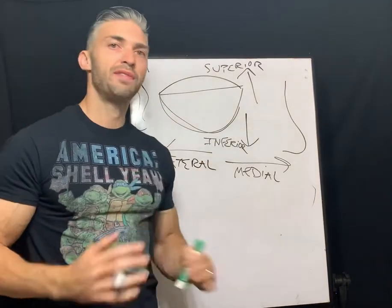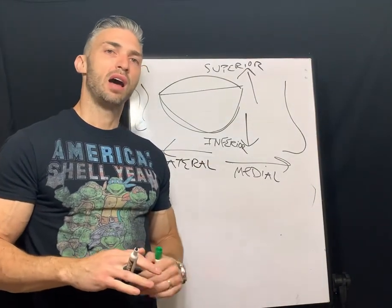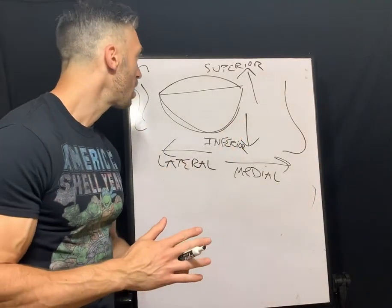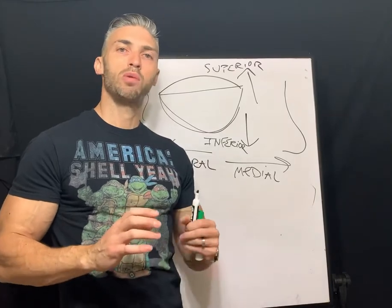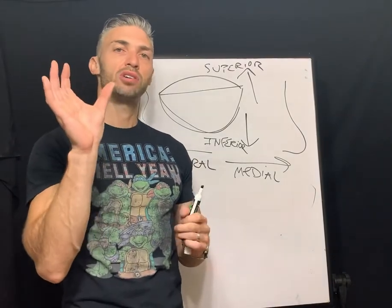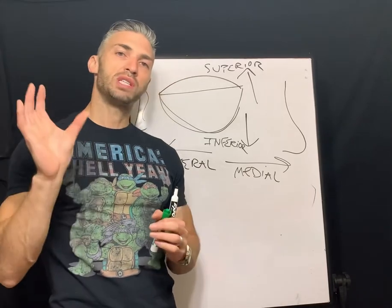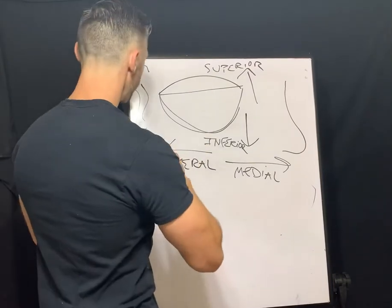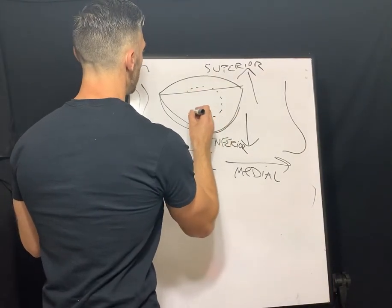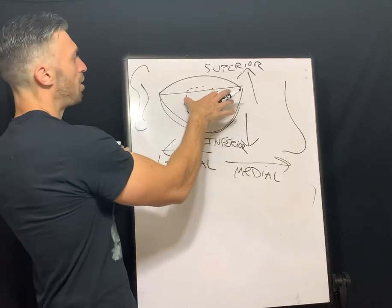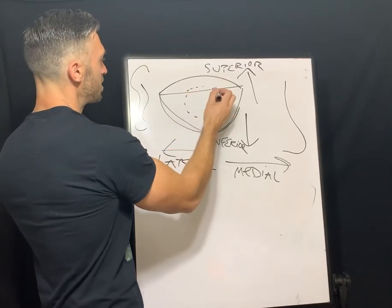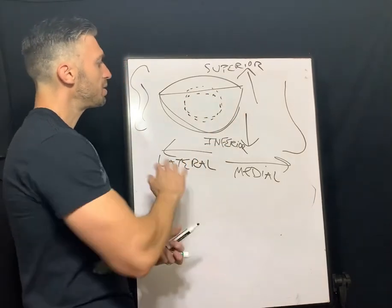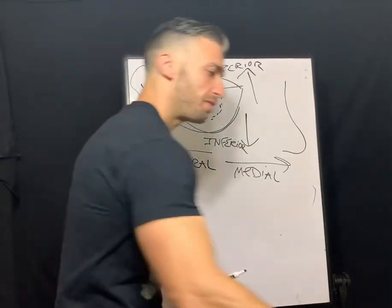Those are terms you'll definitely want to know for your NCLE because they're used to describe a lot of different things. For example, with lid attachment you want the gas permeable lens to center mildly superiorly — resting tucked underneath the upper lid — whereas interpalpebral would be inferior to that, centering more directly on the cornea.